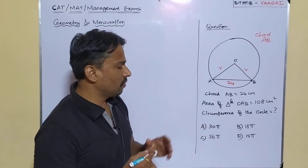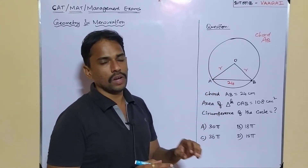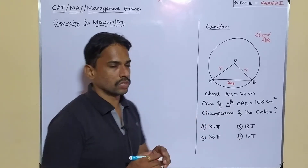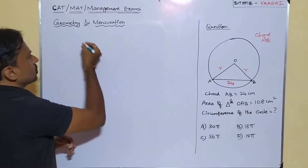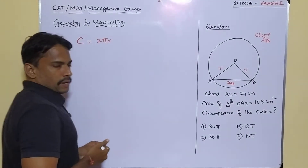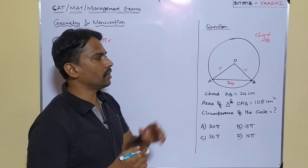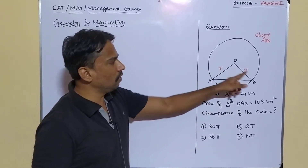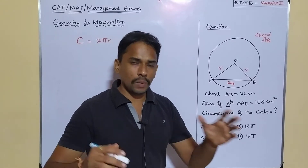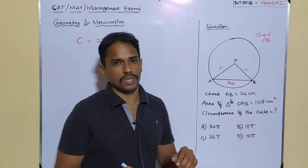The structure of the question is clear — we are asked to find the circumference of the circle. The circumference of a circle is equal to 2πr, so in order to get the answer we definitely need the value of r, the radius of the circle. We have to first find the value of r.